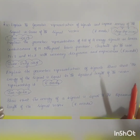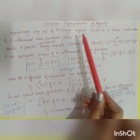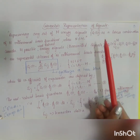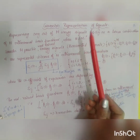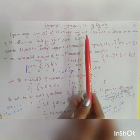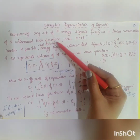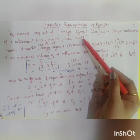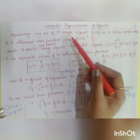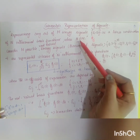The answer for all these questions will be provided in this video. Geometric representation of the signal gives a compact characterization of the signal along with simple analysis. It is defined as representing any set of M energy signals as a linear combination of N orthonormal basis functions, where N is less than or equal to M. The orthonormal basis function is represented as phi.